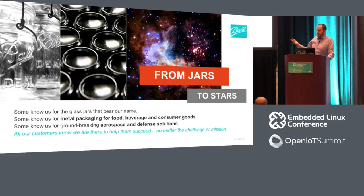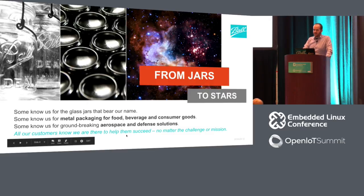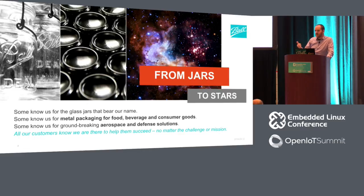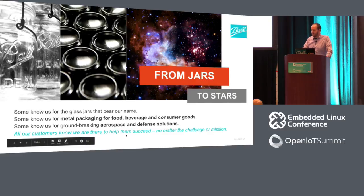Ball started out making the glass jars you use for canning. We don't actually make those anymore. We make aluminum cans for your beer or soda. Then for some reason they bought a technologies division. It didn't really help with the glass jars, but it helped with satellites. So we're building satellites now. It's a small segment of Ball's business, but it's what we do and we're pretty good at it.